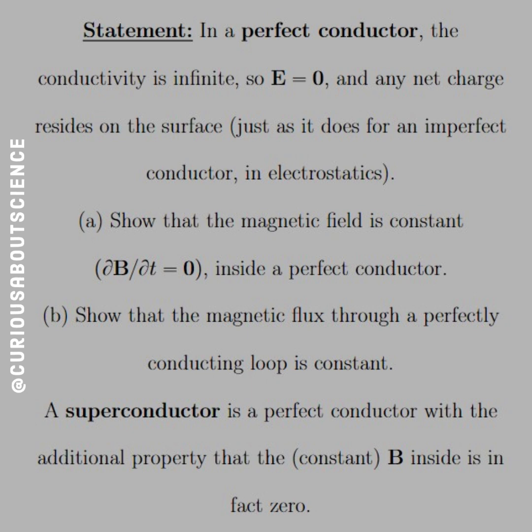So in a perfect conductor, the conductivity is infinite, so E equals zero, and any net charge resides on the surface. Remember that the force is equal to QE. So if E is zero, then the force doesn't move the charges anywhere, hence any net charge resides on the surface, just as it does for an imperfect conductor in electrostatics.